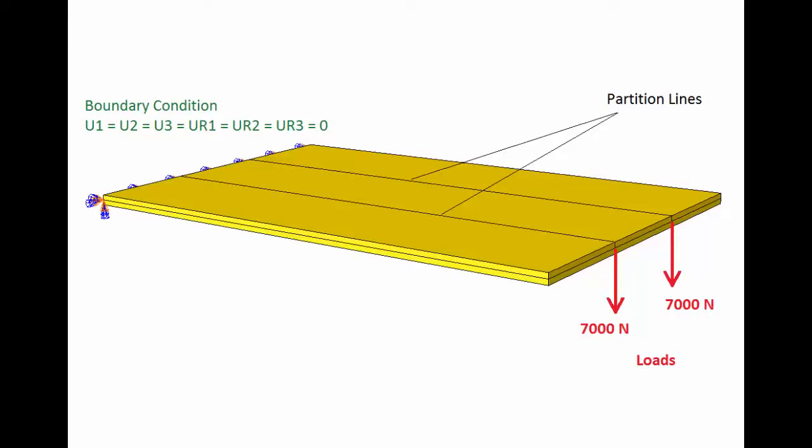The plate will be partitioned twice and the two points where the partition lines meet the edge can then be used to apply the concentrated forces.